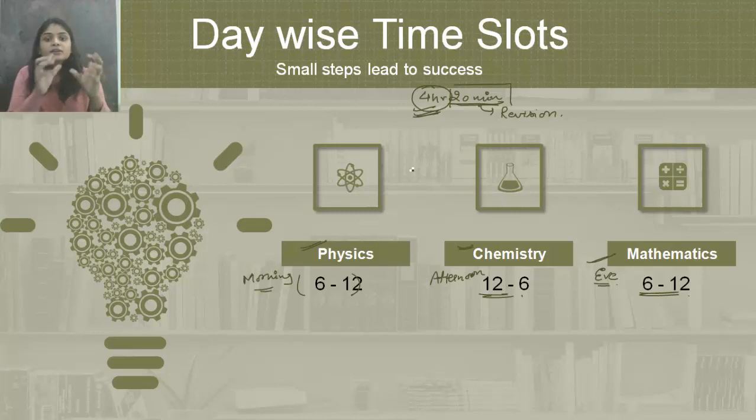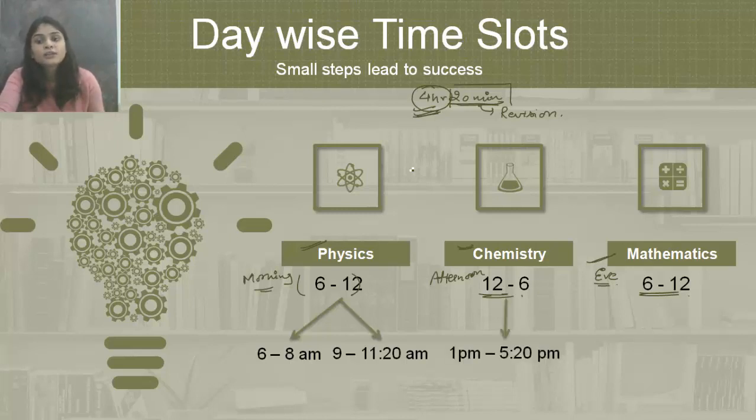Now, I have divided these slots into sittings. So, first sitting, you can give from 6 to 8, and then from 9 to 11:20. Third sitting from 1 to 5:20, that is a continuous sitting, so that you don't have difficulty to give a long sitting of 3 hours in the examination. And fourth and fifth sitting for mathematics, you can give from 6 to 8 PM, and then from 9 to 11:20 again.